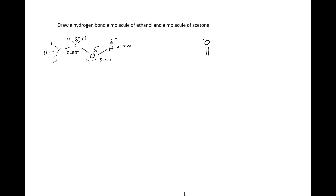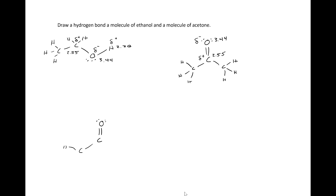We draw the Lewis structure of acetone. The electronegativity of carbon is 2.55 and the electronegativity of oxygen is 3.44. This means that the carbon-oxygen bond is polarized. Carbon will carry a partial positive charge and oxygen will carry a partial negative charge. We redraw the Lewis structure of acetone.